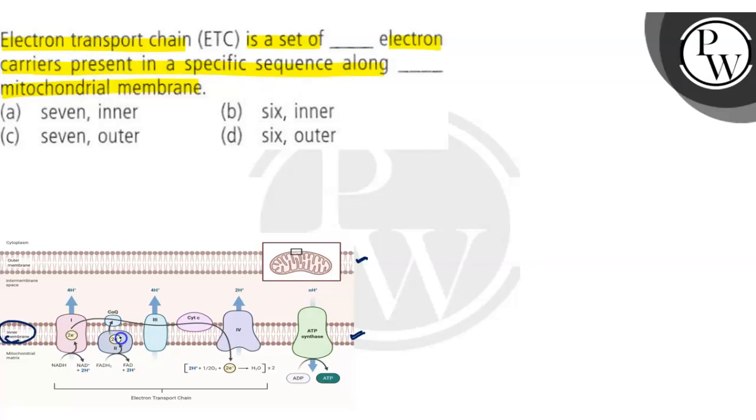Now move to the question. Electron transport chain is a set of blank electron carriers present in a specific sequence along mitochondrial membrane. Where is it happening? In the inner membrane, not outer. So both of these options are eliminated because outer is given here.